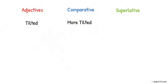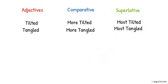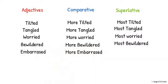Now let's look at other forms of two syllables. Adjectives, comparative and superlative. Number one: Teetered, more teetered, most teetered. Number two: Tangled, more tangled, most tangled. Three: Worried, more worried, most worried. Five: Embarrassed, more embarrassed, most embarrassed.